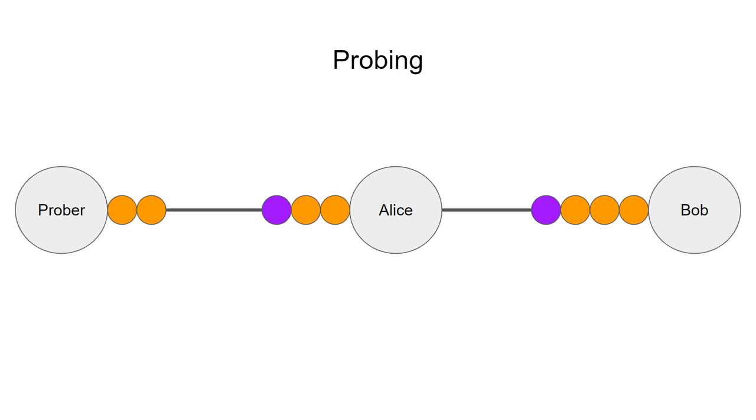Bob doesn't know the preimage of this payment hash. And Alice returns the probe to the prober, but the prober now learns that Alice's balance is at least one coin because she was able to forward this payment to Bob.